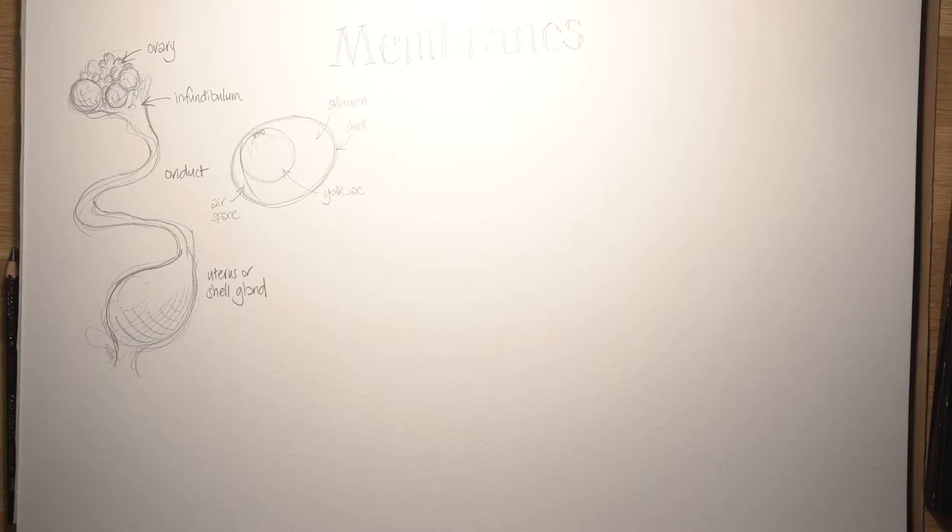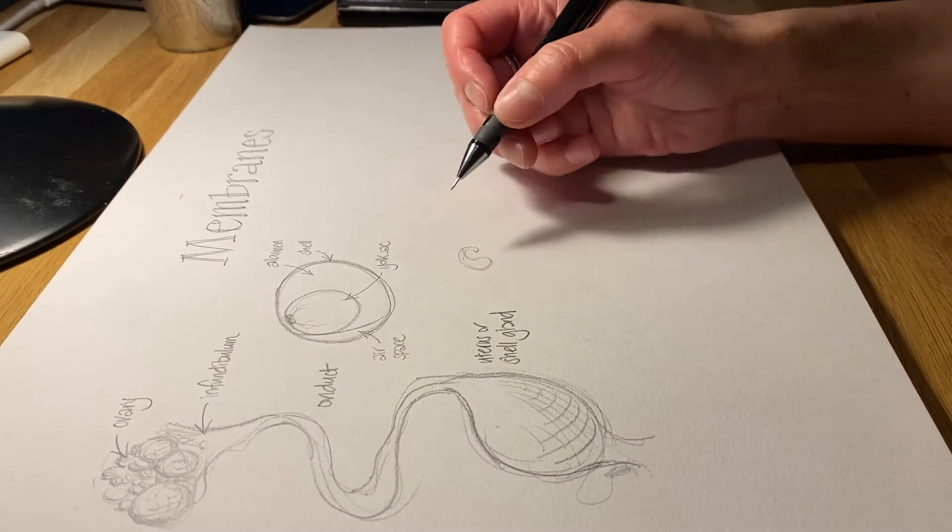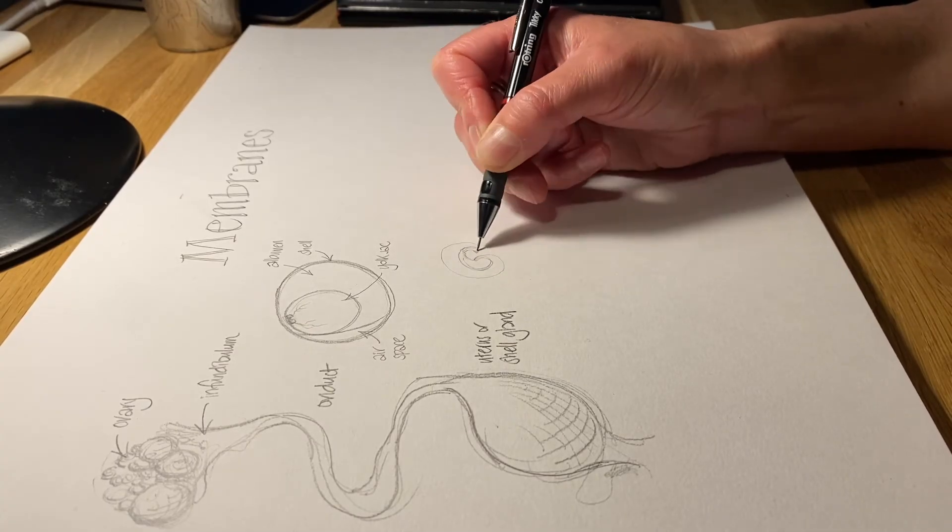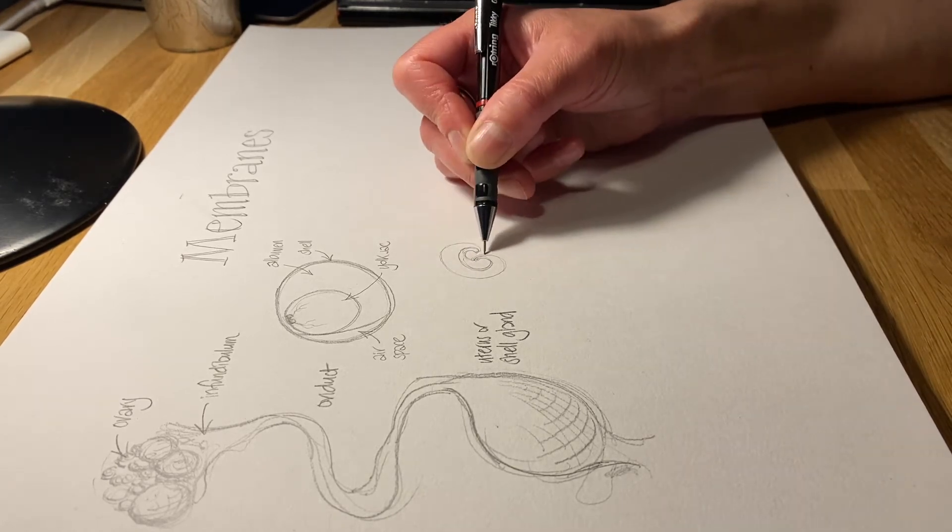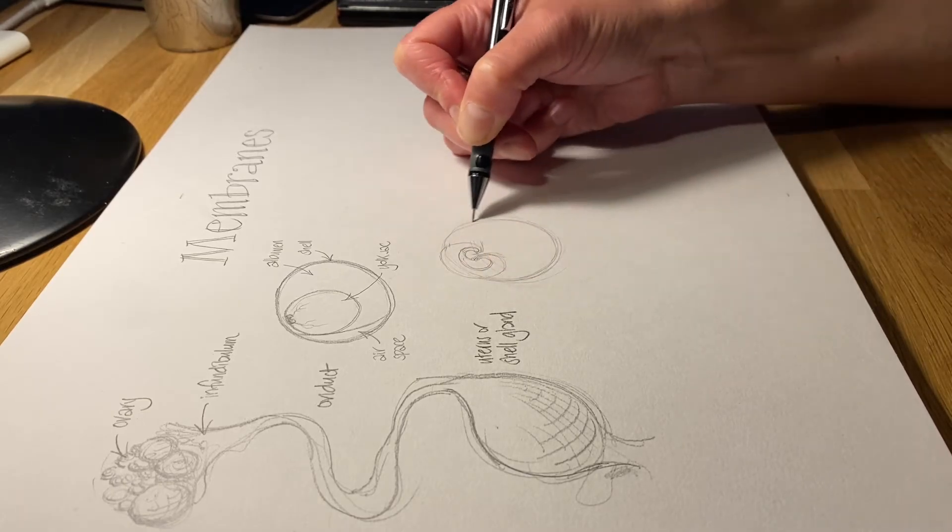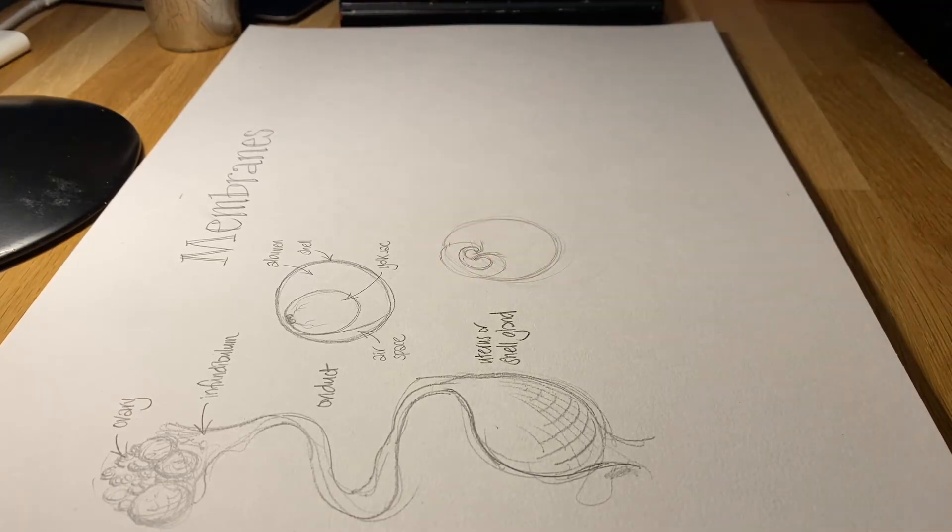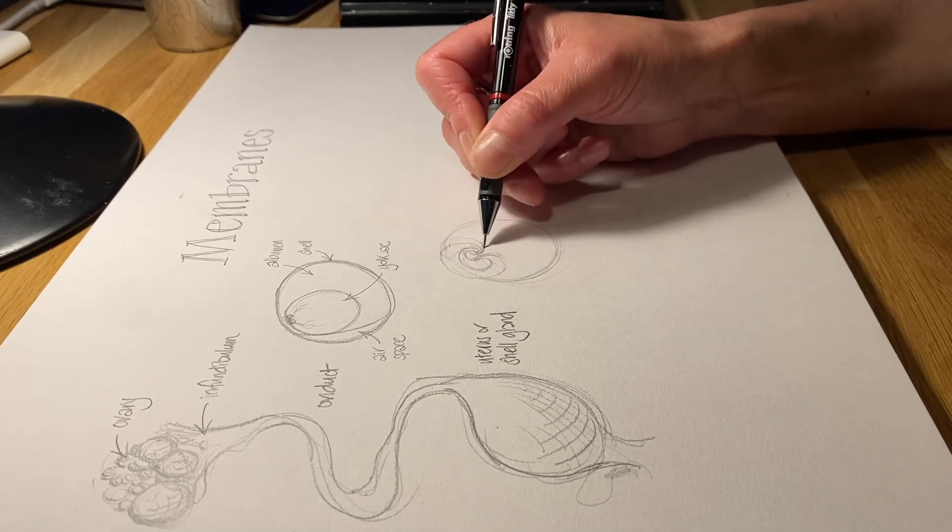What I want to look at in detail are the membranes around that developing chick embryo. Here is that embryo getting bigger, it's got an amniotic membrane around it, so it's floating in amniotic fluid. And it's also attached to that enormous yolk sac full of yolk sac nutrients, yolk sac platelets, and that attaches through to its gut.